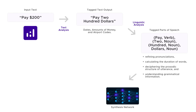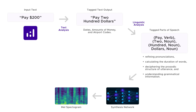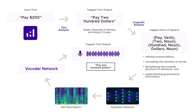Output from linguistic analysis is then fed to a speech synthesis neural network model, which converts the text to mel spectrograms, and then to a neural vocoder model to generate natural-sounding speech.